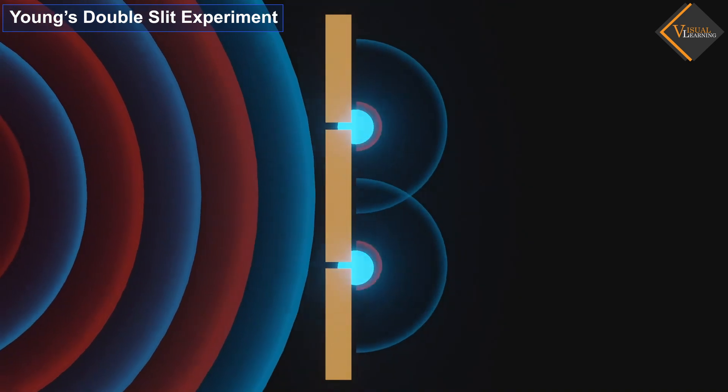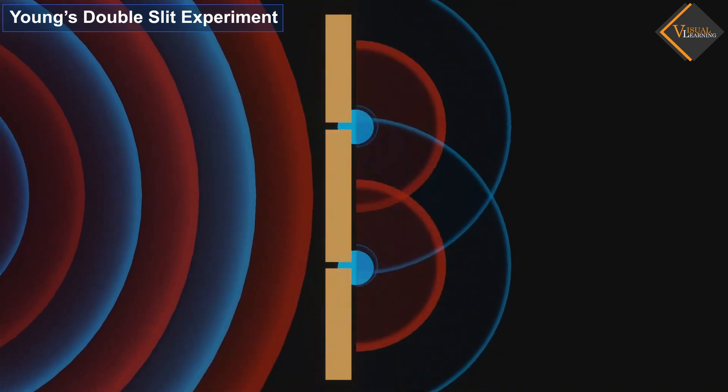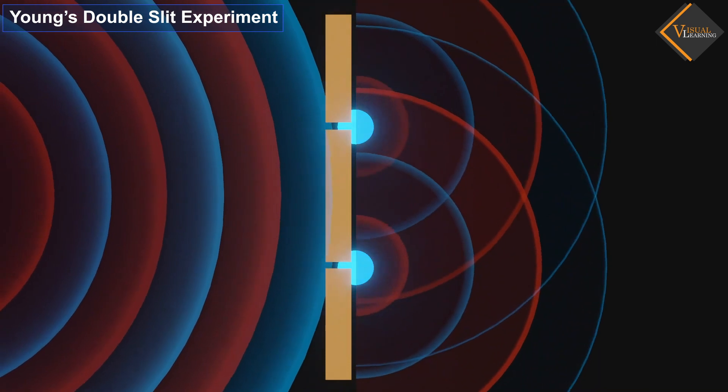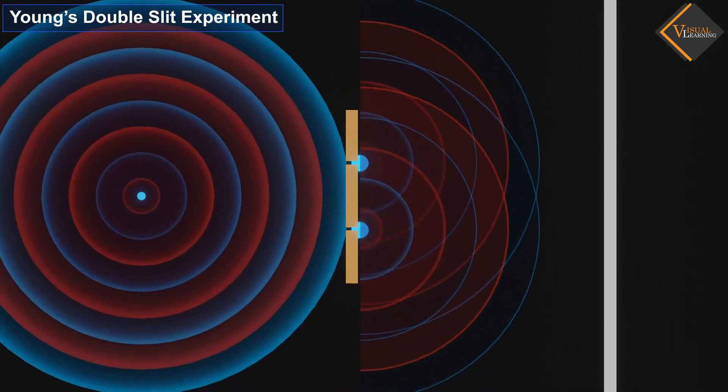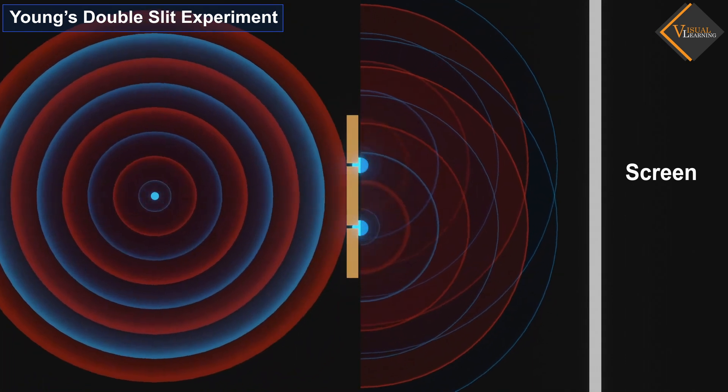When these light waves encounter the slits, two new light sources are created at the slits, generating new light waves. These light waves are incident on the screen and create a pattern like this.